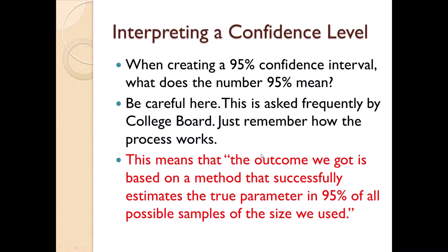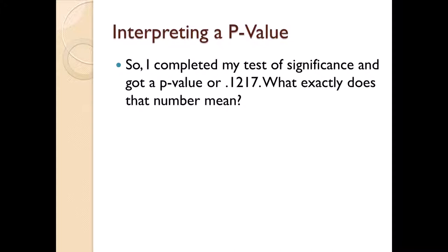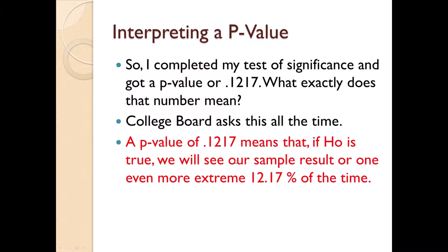Another thing that College Board asks is, what is this p-value mean? And this is another thing that I realize is part of your portfolio. So you do a test of significance, you get a p-value of 0.1217. What does that number mean? A p-value of 0.1217 means that if H0 is true, we will see our sample result, or one even more extreme, 12.17% of the time.